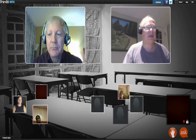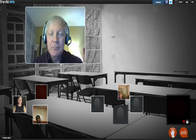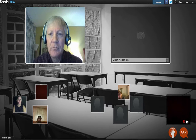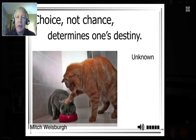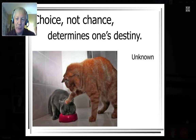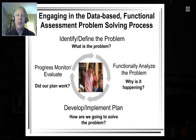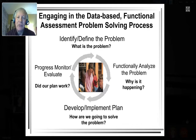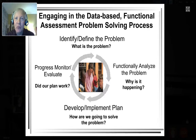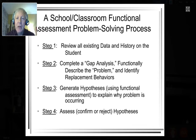Choice, not chance, determines one's destiny — we don't want to play intervention roulette. We want to engage in a data-based functional assessment problem-solving process. The process: identify the problem, figure out why it's happening, link the underlying reasons to instructional or intervention approaches at some level of intensity, and then evaluate whether it worked. We have to review existing data, identify where the student is versus where they need to be, identify the gap, use the scientific method to generate hypotheses about why the gap is occurring, and collect data to confirm or reject those hypotheses.